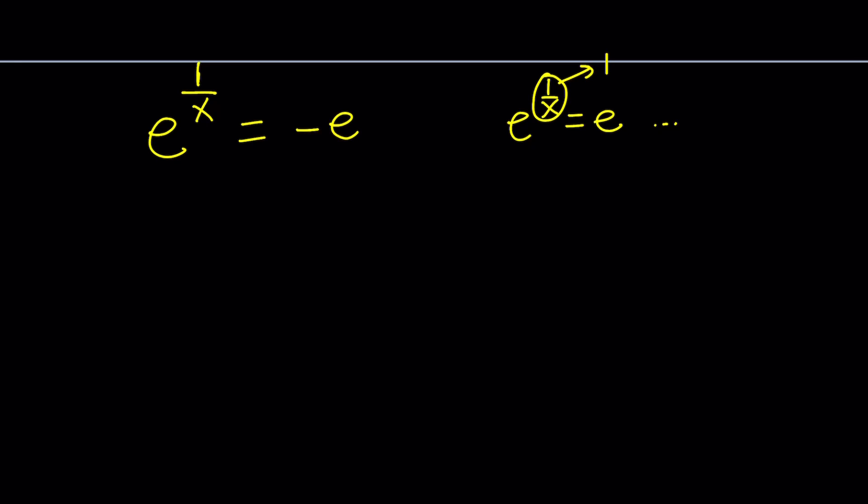So to be able to solve this problem we have to complexify the right hand side which means we're going to write this as a complex number. Now negative e on the complex plane or the argand diagram can actually be written as negative e plus 0i. So since e is positive, negative e is negative, it's just going to be here.